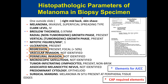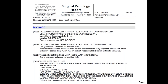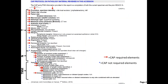Two parameters — regression and perineural invasion, highlighted in orange — are now required elements per the updated CAP 2017 edition. In the previous version, those were just recommended elements. For resection specimens, the report includes wide local excision findings and sentinel lymph node results. We report both required and recommended elements by CAP and AJCC, with TNM staging information at the bottom.